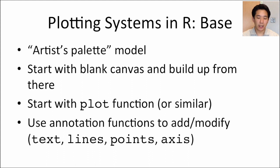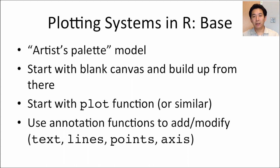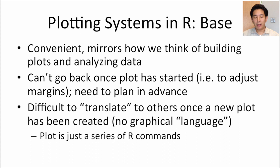In base R, you start with a blank canvas and use tools to draw things on it — you plot points, add a line, add a legend — building up a picture of data one element at a time. You typically start with a function like plot, which generates the plot, and then annotate with functions like text, lines, points, and axis. This is convenient in many ways and mirrors how we think about building plots, starting with data and adding things on top as we build up the picture in our minds.